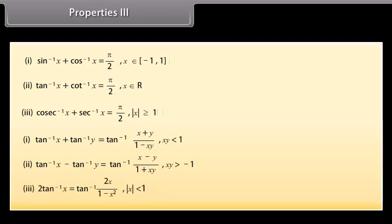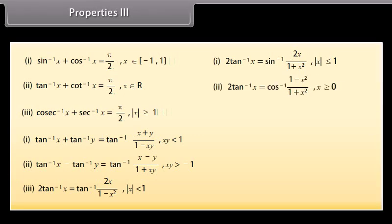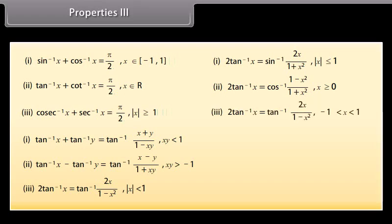Further identities: 2 tan⁻¹ x = sin⁻¹(2x/(1 + x²)), |x| ≤ 1. 2 tan⁻¹ x = cos⁻¹((1 − x²)/(1 + x²)), x ≥ 0. 2 tan⁻¹ x = tan⁻¹(2x/(1 − x²)), −1 < x < 1.